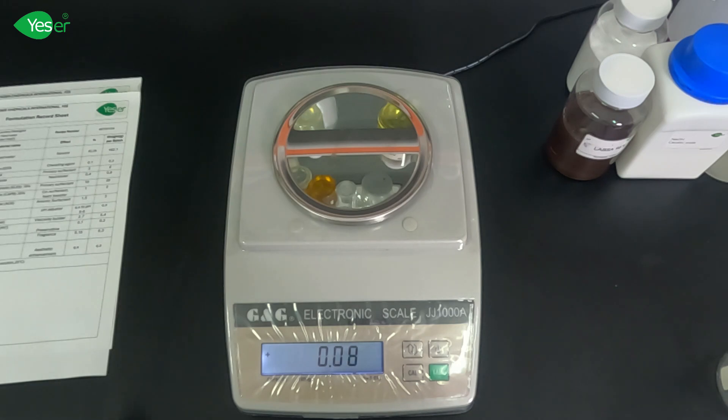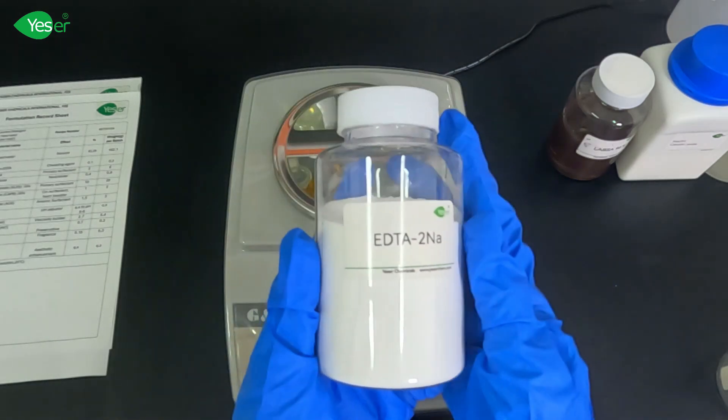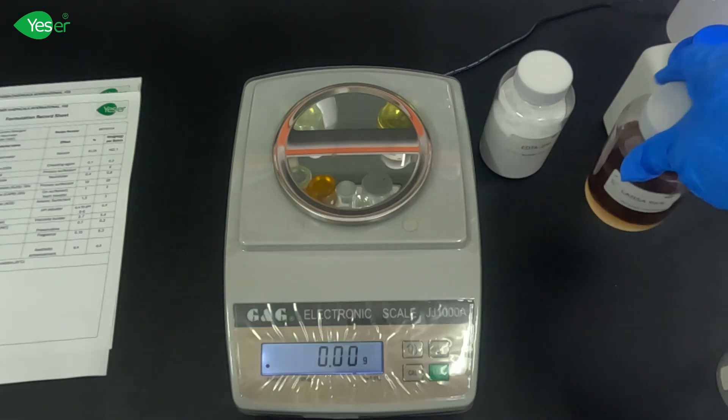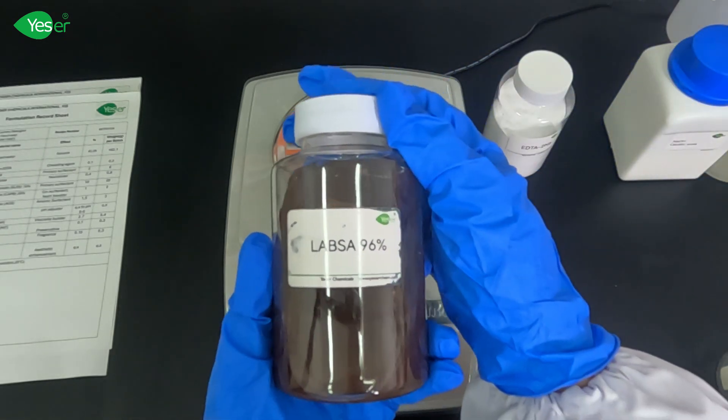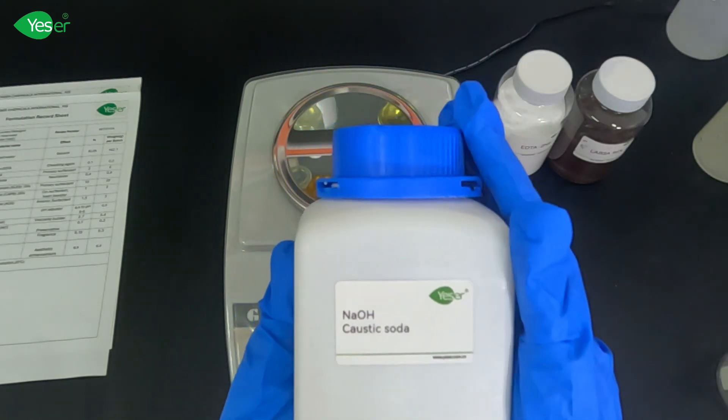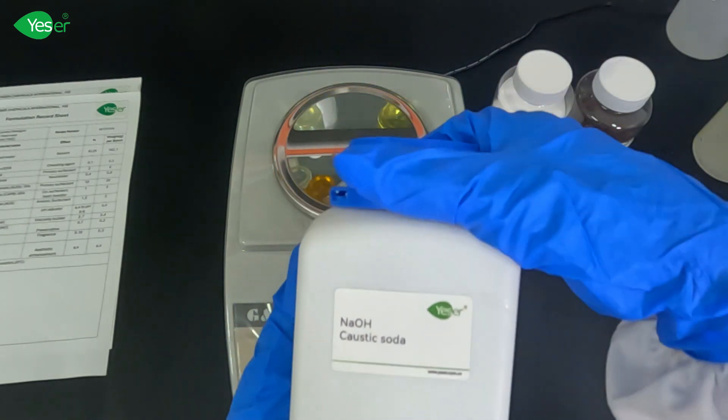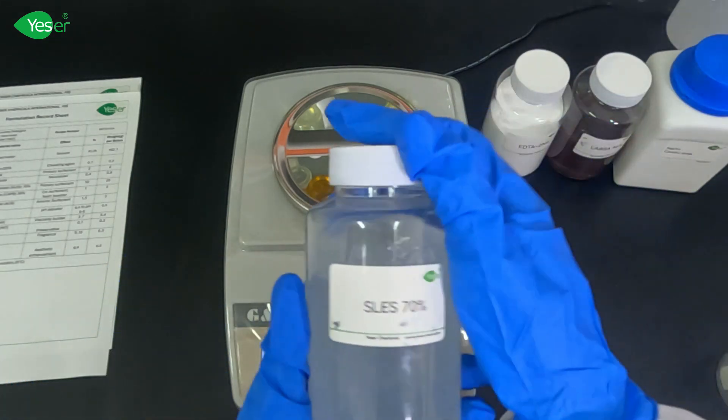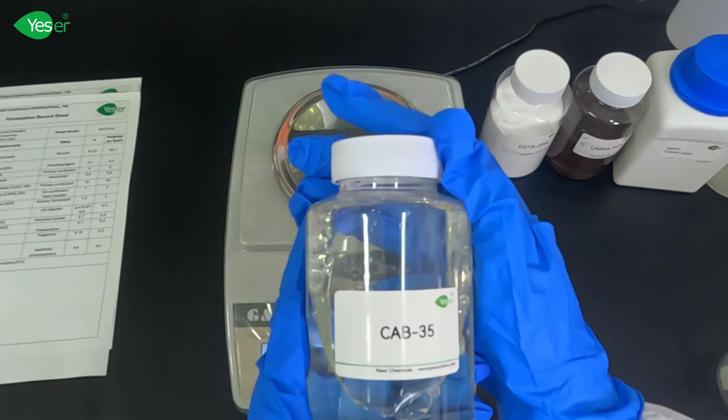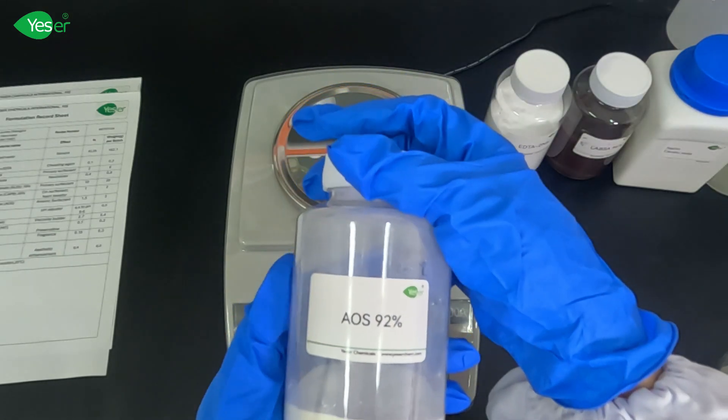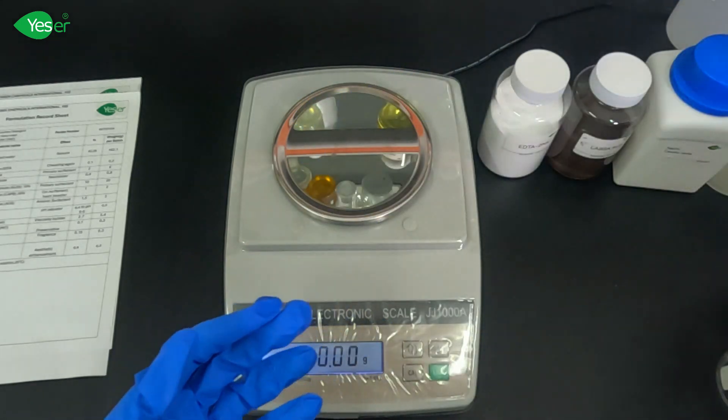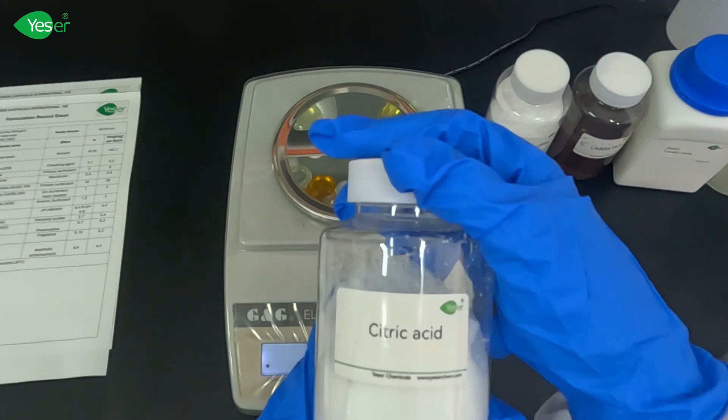Let's start by introducing our ingredients. First is our EDTA-disodium or our chelating agent. Next is our LABSA 96%, our primary surfactant. Next for our neutralizer for LABSA is caustic soda or NaOH. Then we will have our SLE-70%. Next one is CAB35. Next ingredient is alpha-olefin sulfate or AOS 92%. For our pH neutralizer, we also have citric acid.